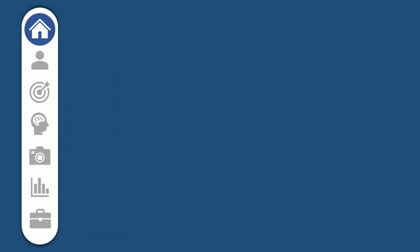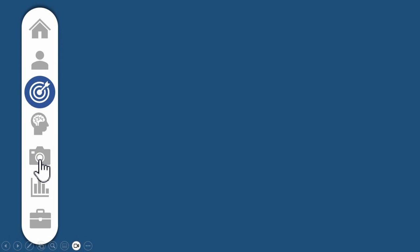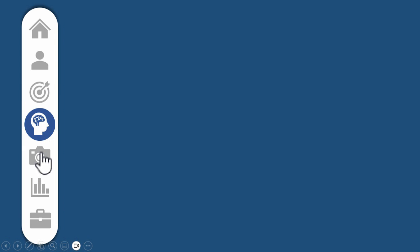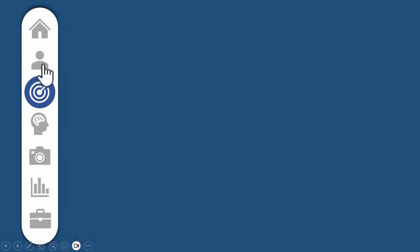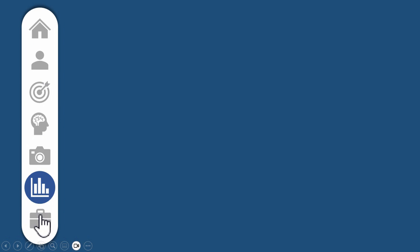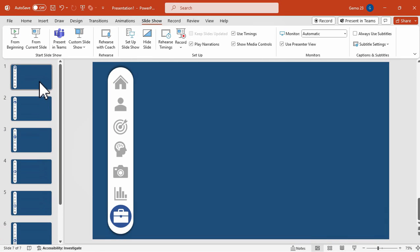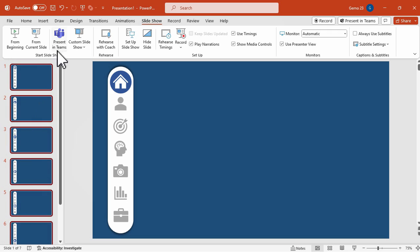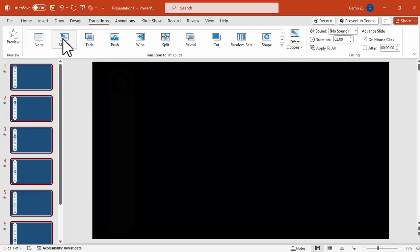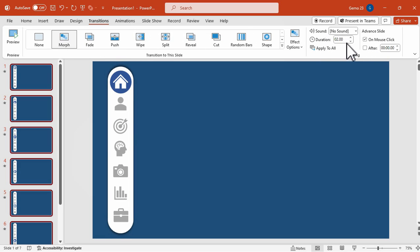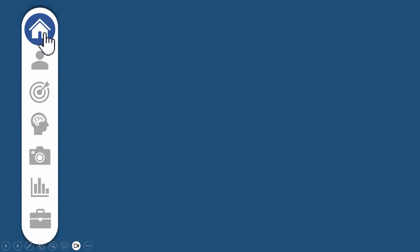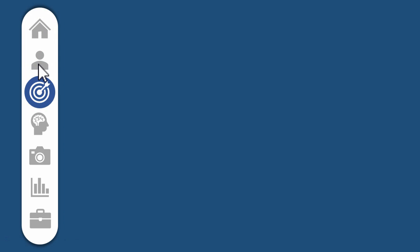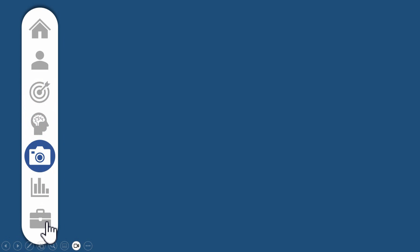Here is the progress so far. As you can see, we can jump to different slides by clicking the icons — this functionality is due to the hyperlink function. The issue is achieving a smooth movement of the circle shape, so we need to apply the Morph transition to all slides. Select all the slides, go to the Transitions tab, click Morph, and adjust the transition duration. The circle now moves smoothly as we navigate from each icon, thanks to the hyperlink and Morph transition functions.